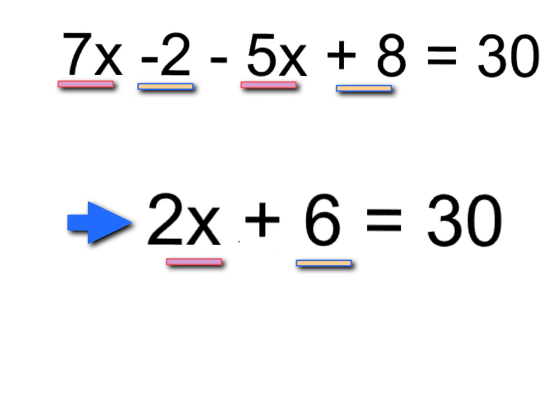First thing I need to do is take the two terms that have the variable, the x terms: 7x and note this is negative 5x. Remember the symbol in front of the term dictates whether it's positive or negative. You are going to combine these terms together. A positive 7 and a negative 5 combine together to make positive 2x's.